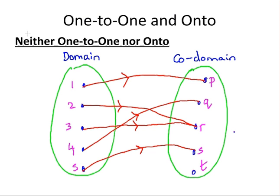Lastly, here's an example of a function that is neither one-to-one nor onto. Looking at the co-domain, p, q, r, and s have ancestors, but t does not have an ancestor. Also, r has two ancestors, which means this function is not one-to-one. So this function is neither one-to-one nor onto.